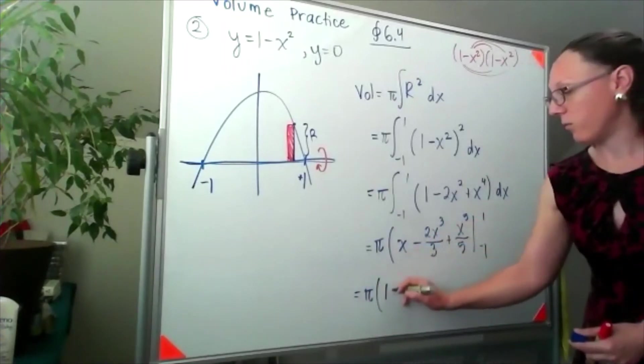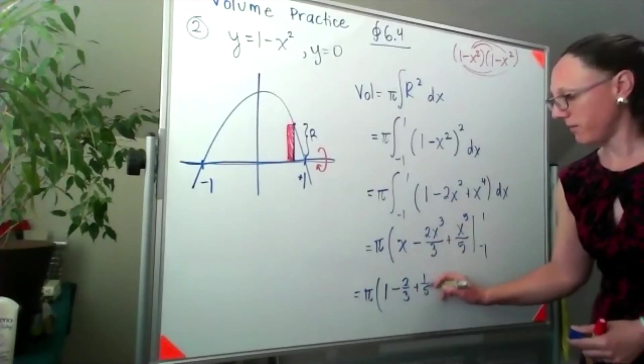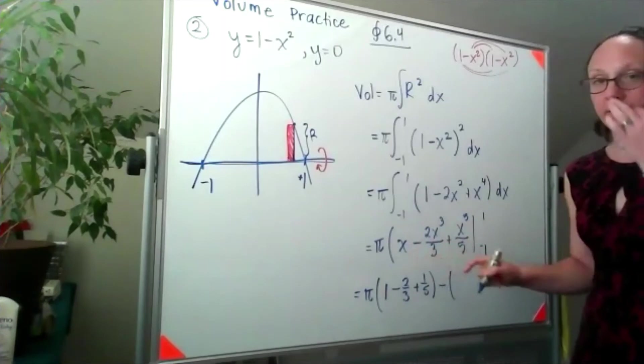Plugging in 1, I'd have 1 minus 2 thirds plus 1 fifth, and then we'll subtract off plugging in negative 1.